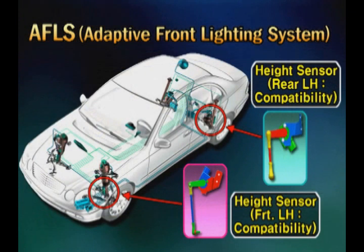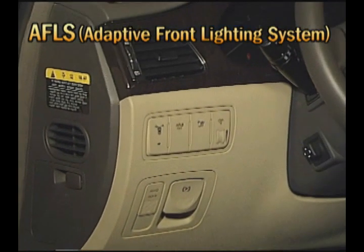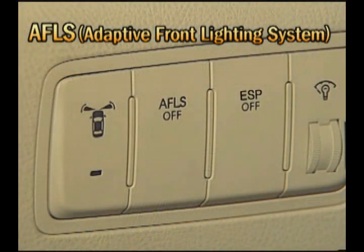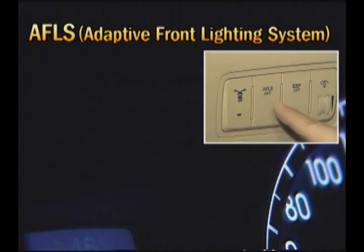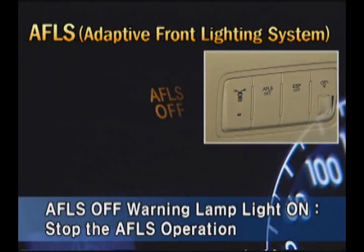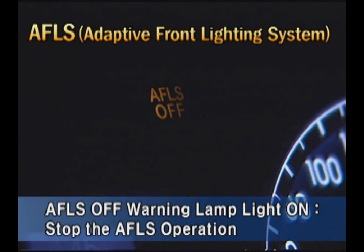For vehicles without ECS, there is one height sensor each at the front side and rear side to receive the vehicle level signal. At the left lower side of the instrument panel, there is also an AFLS off switch. By operating this switch, the AFLS off warning lamp lights on the instrument panel and the system stops working.